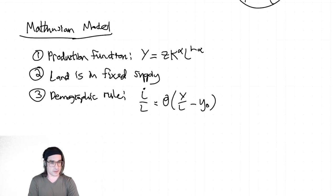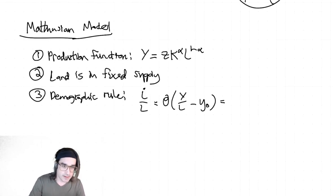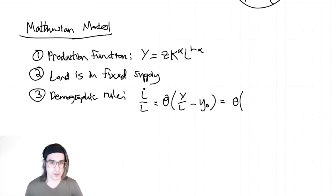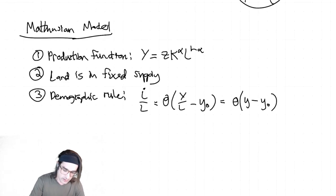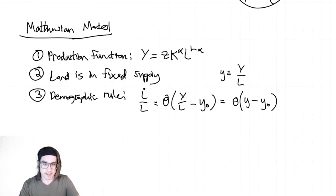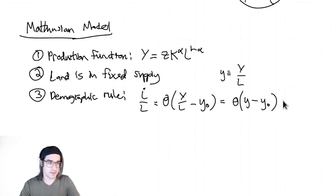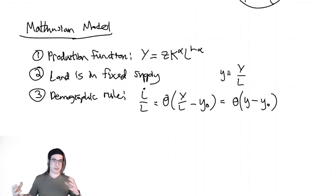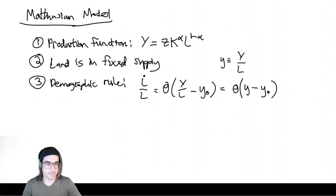One notational thing going forward: anytime I write a lowercase letter that's usually uppercase — like lowercase y — that's going to be the per capita analog. So lowercase y is capital Y over L. Anytime you see a lowercase letter you don't recognize, it's a per capita thing. That's why Y-zero is lowercase — it's a per capita notion of the subsistence level of income. You have a certain surplus on a per capita level, and that maps into a population growth rate.